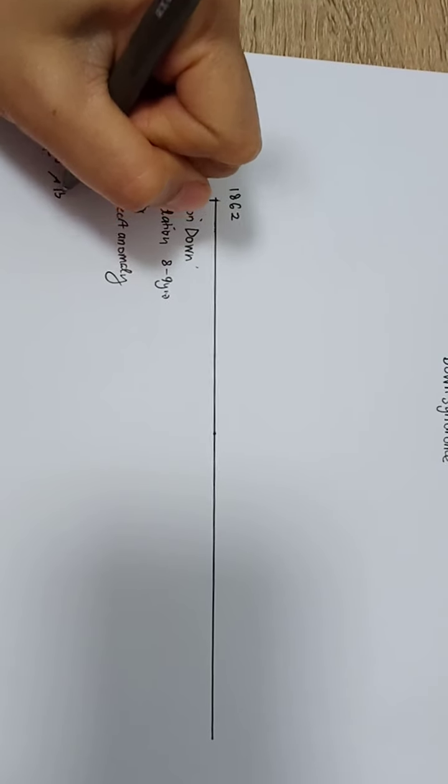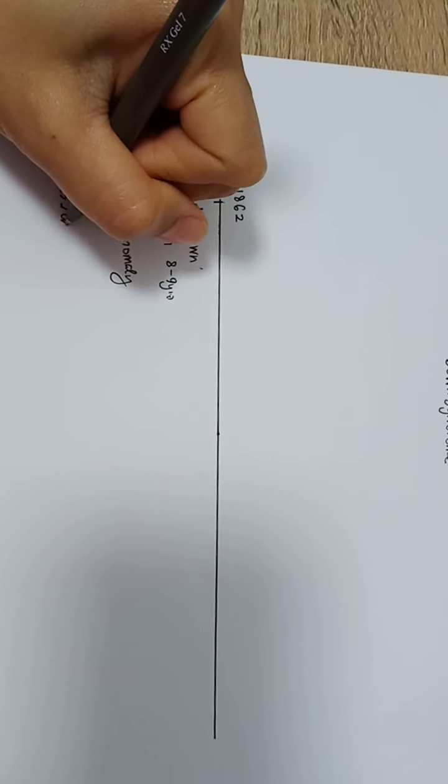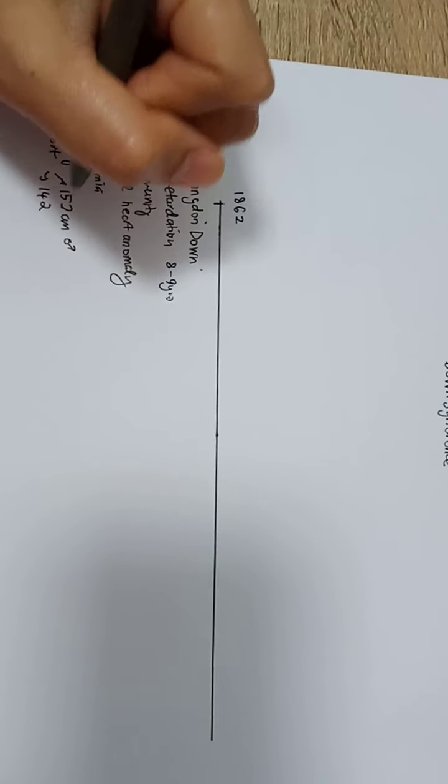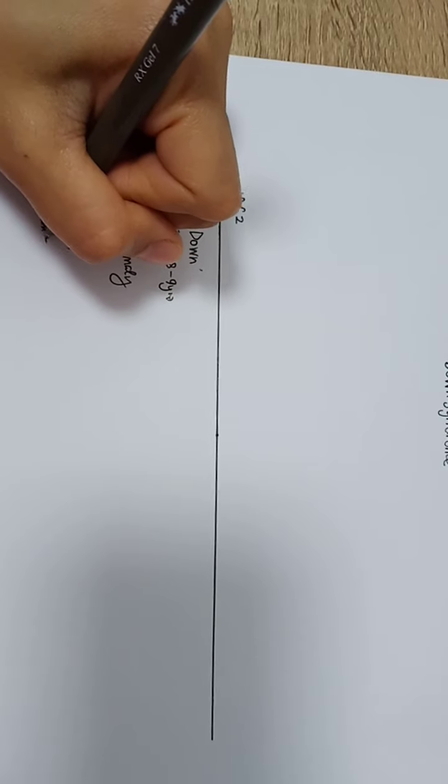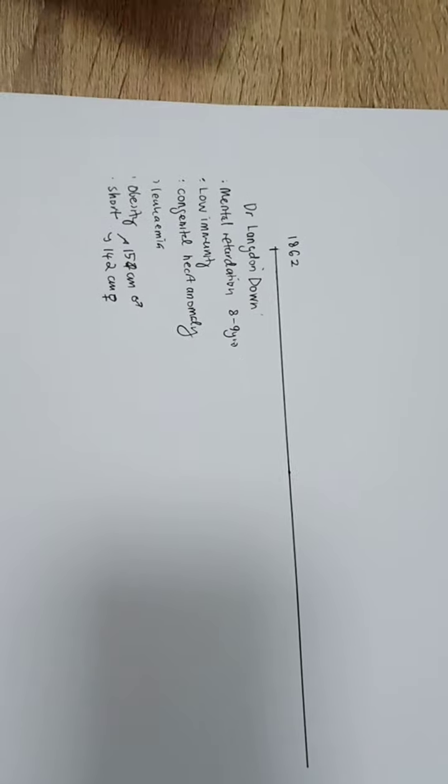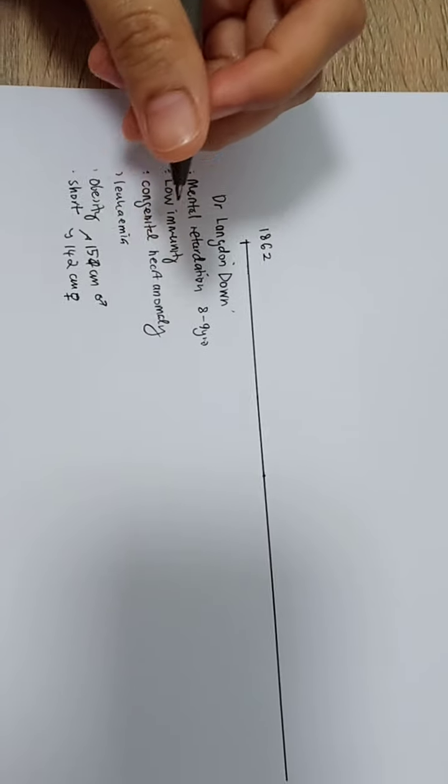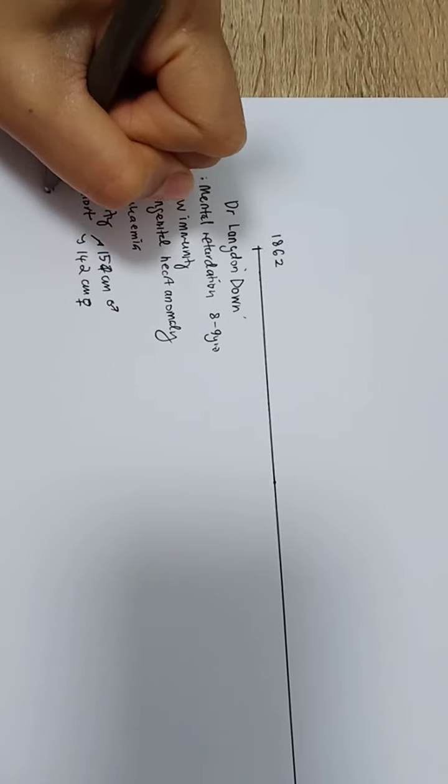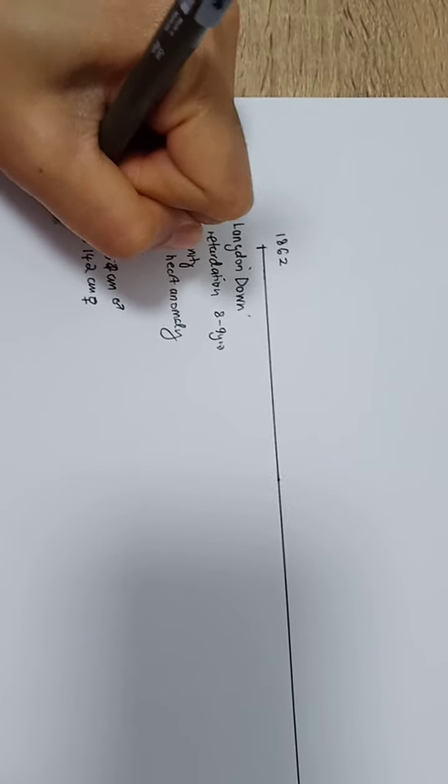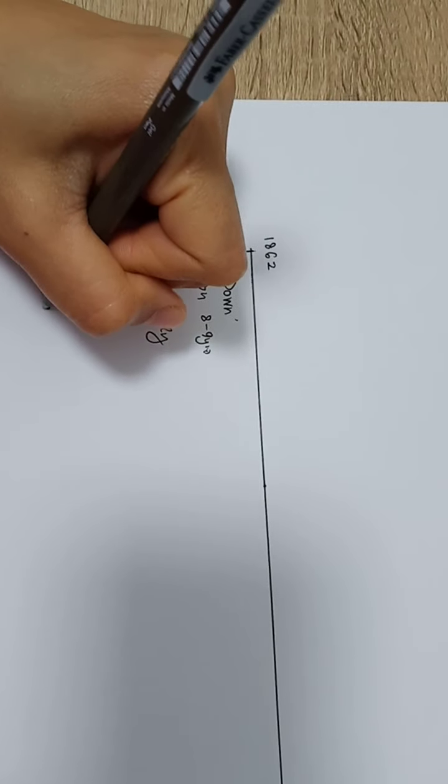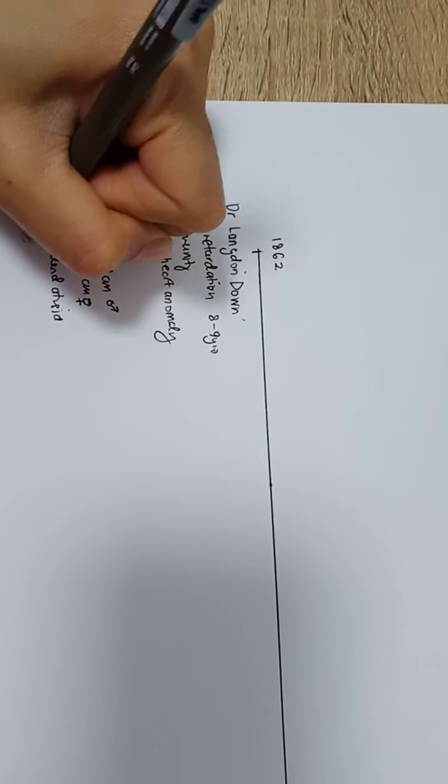At the same time that Langdon Down looked at this group of people, they also suffered from GIT issues like duodenal atresia and also Hirschsprung's disease.